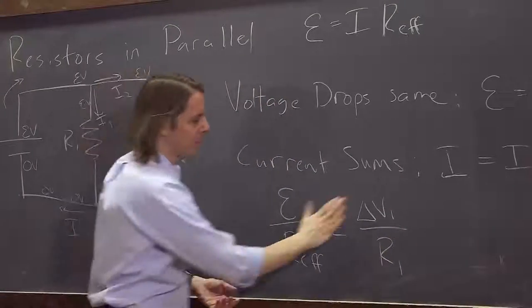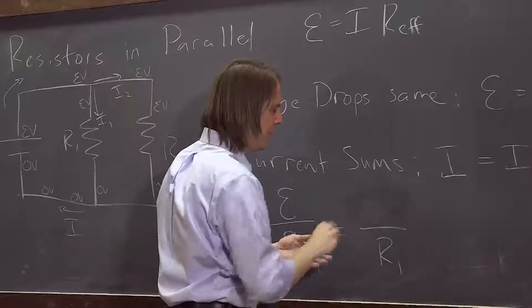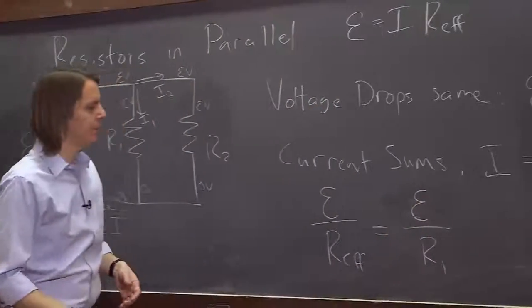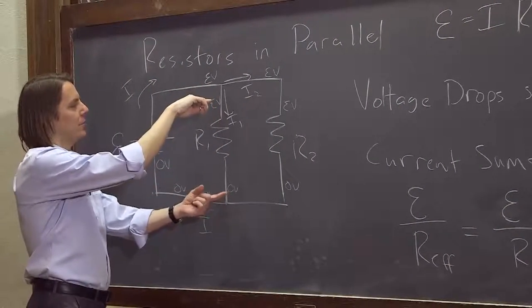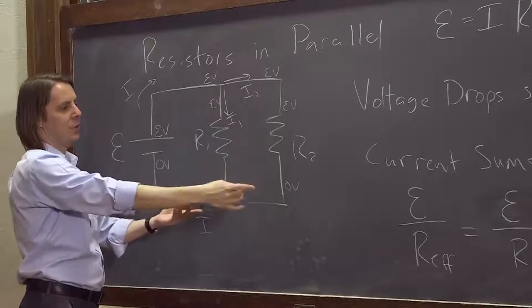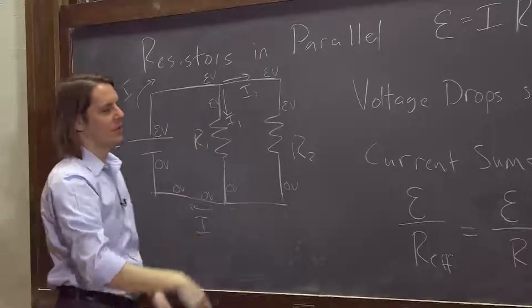But we already talked about delta V1 is just the EMF. So if you just look at R1, it's got an EMF across it of E, and it's got I1 going through it, and there's R1. So that's that part.